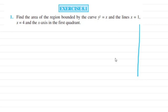Let's see one example. Find the area of the region bounded by the curve y² = x and the lines x = 1, x = 4, and the x-axis in the first quadrant. First,